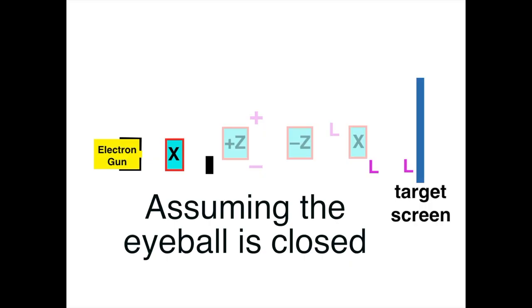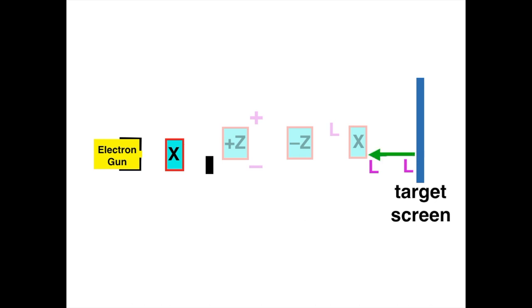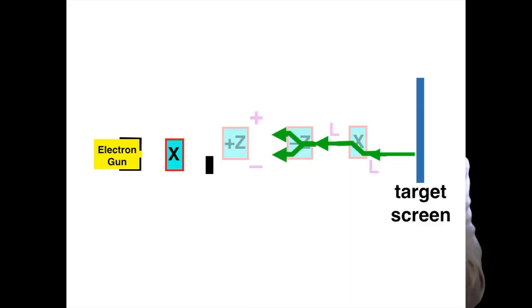Now on the other hand, consider what happens to the elementary rays if the eyeball is closed. An elementary ray starting at the L point on the target screen with left-handed spin goes through that magnet there and continues to have a left-handed spin as it enters the middle pair of magnets Z-plus and Z-minus. Now if the eyeball is closed, then that pair of magnets has no effect at all, it acts as if it's not there, and therefore the elementary ray goes through that pair of magnets into the last magnet near the electron gun still carrying a left-handed spin.